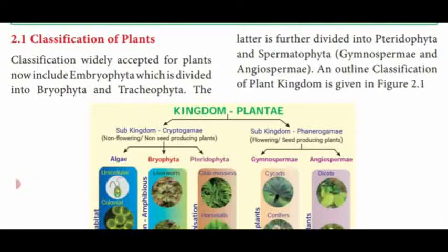Next we are going to see the classification of plants. Totally, plants are classified under Embryophyta. Embryophyta is divided into Bryophyta and Tracheophyta. Tracheophyta is further divided into Pteridophyta and Spermatophyta. Spermatophyta is then divided into Gymnospermia and Angiospermia. This is the general classification of plants.